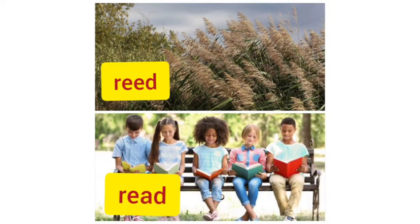Let's see some examples. First one: R-E-E-D. How do we pronounce this? 'Reed.' What is the meaning of R-E-E-D? Reed means a tall, slender-leafed plant of the grass family which grows in water or on marshy ground. That plant is called a reed. Look at this picture — this is called reed.